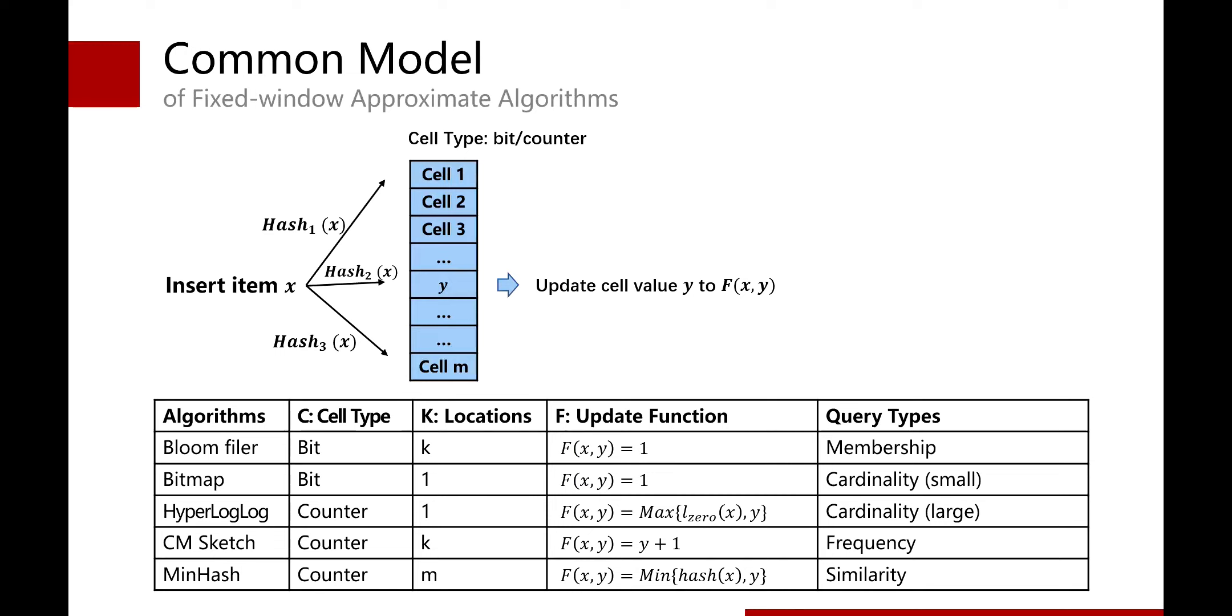Here, we summarize a common model of fixed-window approximate algorithms. It includes more than 5 algorithms for various query types. First, all these algorithms have an array of cells. The cell can be a bit or a counter. Second, when inserting items, these algorithms update one or more cells. Third, when updating the cell, the new value can be decided by the update function. These algorithms can answer different kinds of queries. We can arbitrarily select some algorithms to deploy according to the query type that needs to be answered. For easy understanding, we still use BloomFilter as an example to introduce our framework.